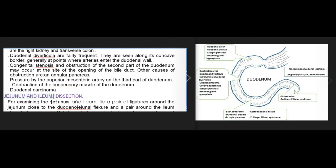Duodenal diverticula are fairly frequent and are seen along its concave border, generally at points where arteries enter the duodenal wall. Congenital stenosis and obstruction of the second part of the duodenum may occur at the site of the bile duct opening. Other causes of obstruction include an annular pancreas, pressure by the superior mesenteric artery on the third part of the duodenum, and contraction of the suspensory muscle of the duodenum.